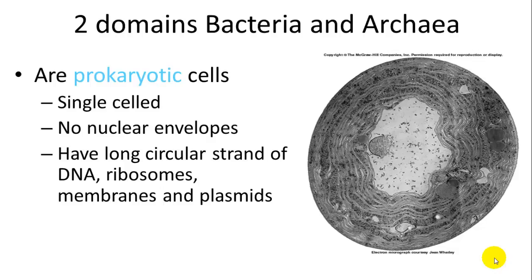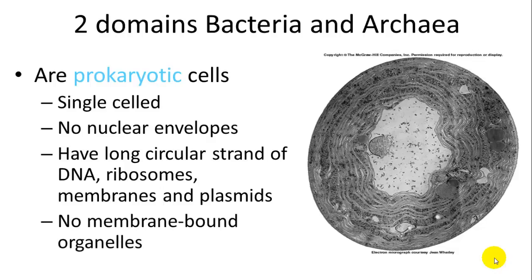The chromosome is one circular strand — not necessarily circle-shaped, but it goes like a string that's connected. Bacteria also have their own DNA, ribosomes, membranes, and plasmids, but they do not have organelles. They don't have chloroplasts or endoplasmic reticulum. All they have are ribosomes, and they also have a cytoplasm.